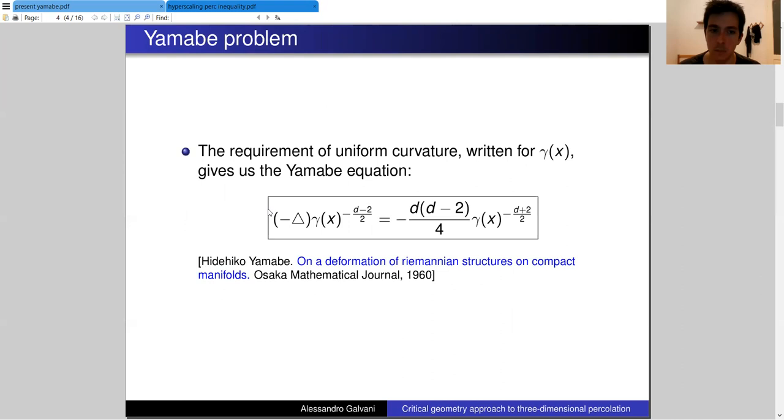This constraint can be translated into an equation for our function gamma of x. This equation is called the Yamabe equation. It is a specific case of the more general Yamabe problem.